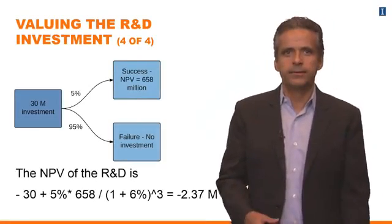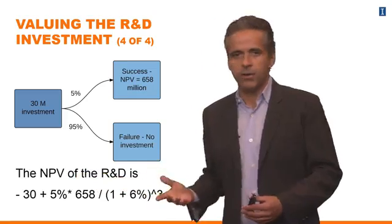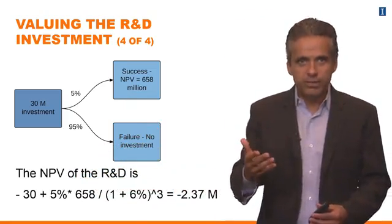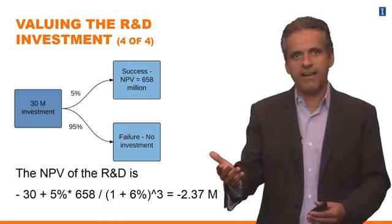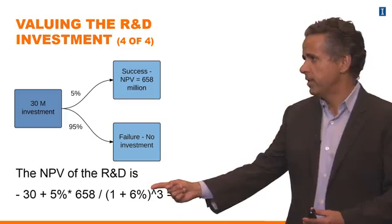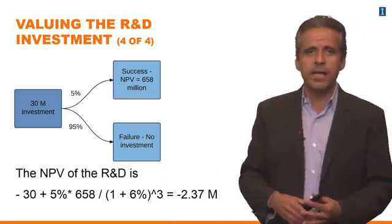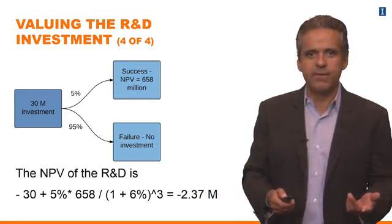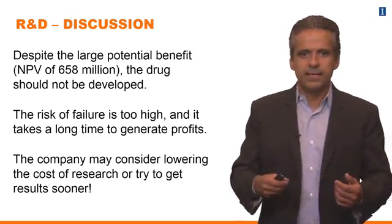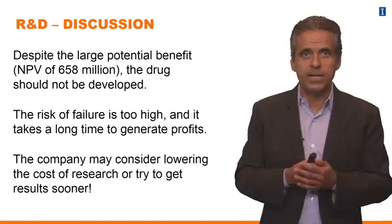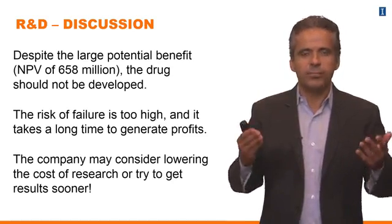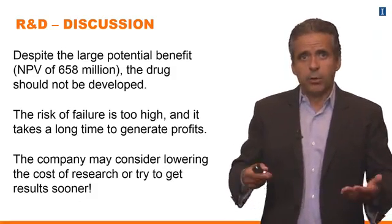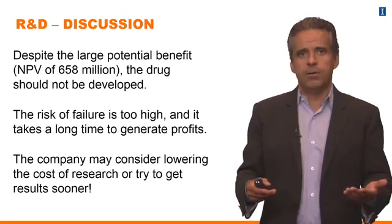Here is the solution. You have the minus 30 million at the beginning. Since there is only a 5% chance of getting the positive NPV, we multiply 658 million by 5%, and then we discount back three periods — our assumption is that research takes three years. With these numbers, we get an NPV of minus 2.37 million dollars. So the R&D investment has a negative NPV. Despite the large potential benefit if the drug succeeds, the R&D just doesn't make sense for shareholders: the risk of failure is too high and it takes too long to generate profits.